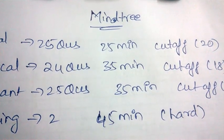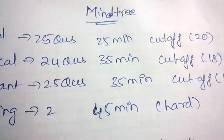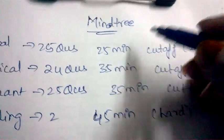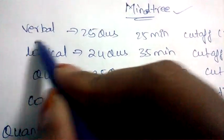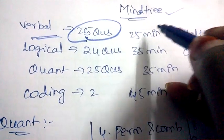Hello friends, welcome back to Best Way to Study. In this video we are going to discuss the written pattern of Mindtree. For verbal, they'll be asking you 25 questions out of which they'll be giving you 25 minutes and the cutoff will be minimum 20.